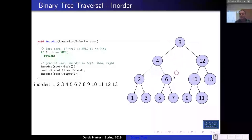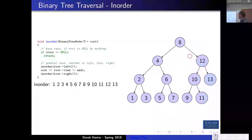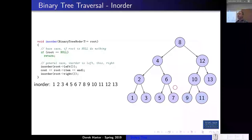One thing about a binary search tree is that an in-order traversal will always output the items in sorted order, because a binary tree is organized for search. To search for an item and find out whether it's in a binary tree or not, you just need log base 2 of n comparisons to determine whether it's in there.